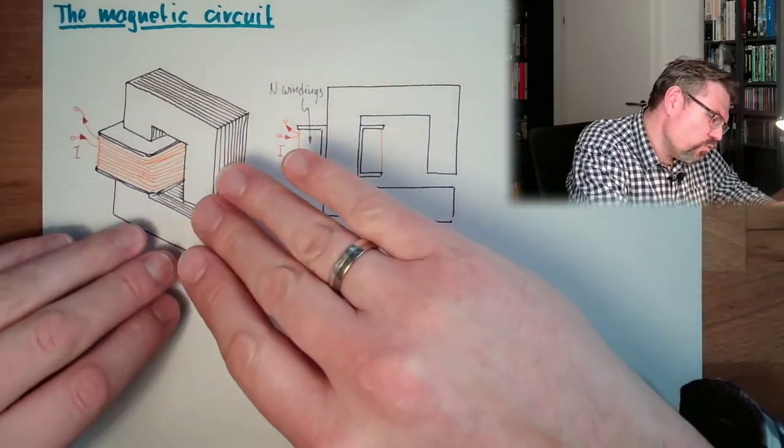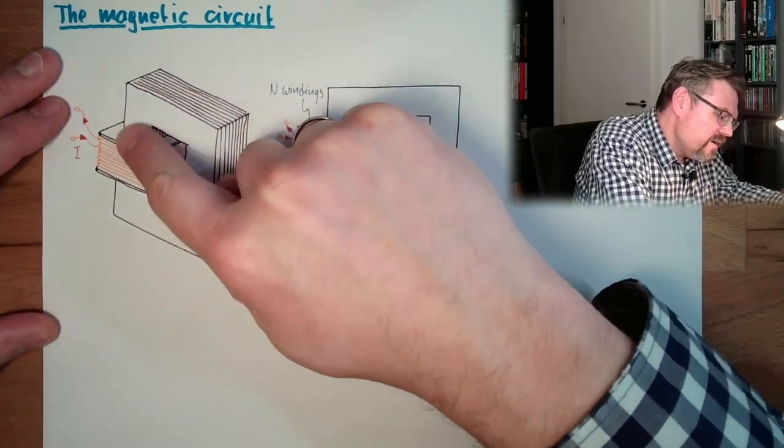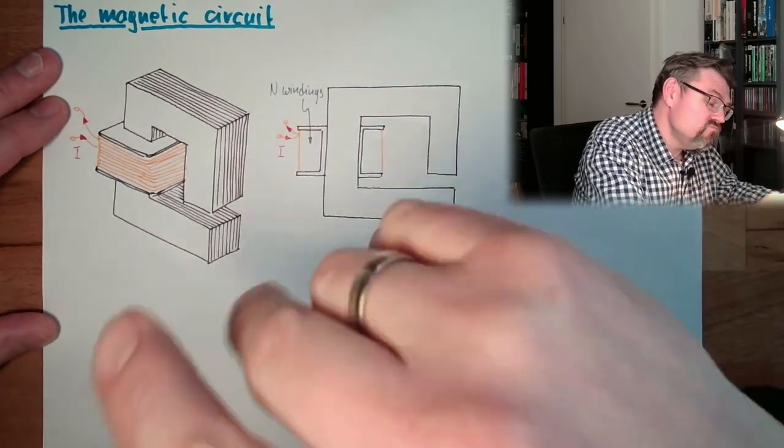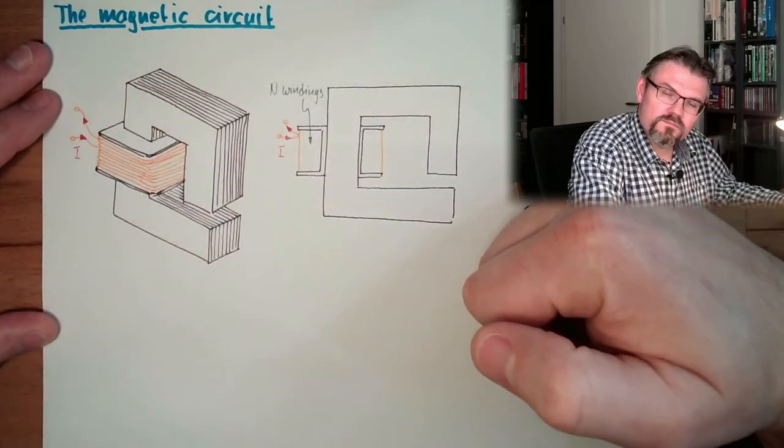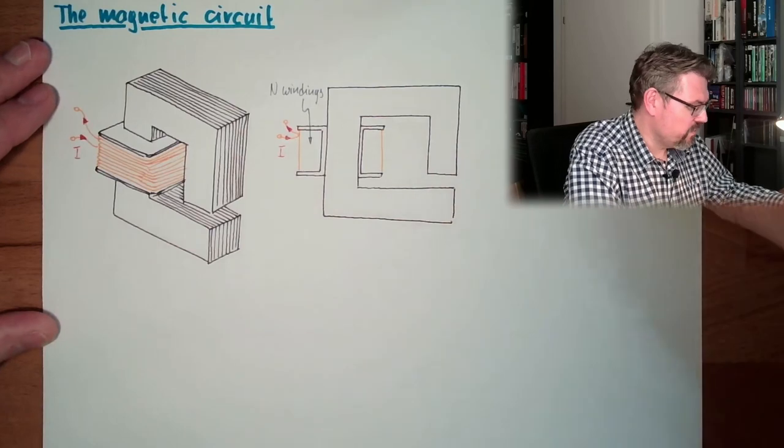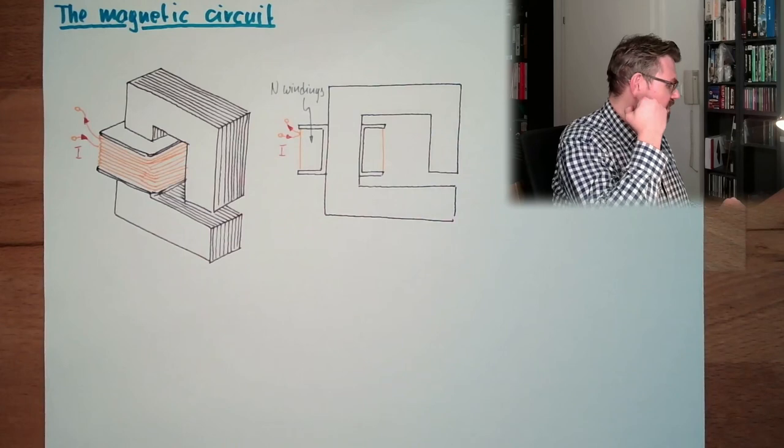They are usually iron, steel, sheet metals stapled. This is how those things look. And now we want to analyze this thing.